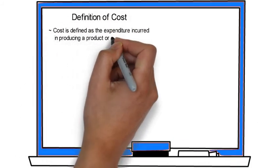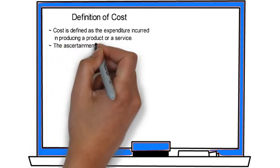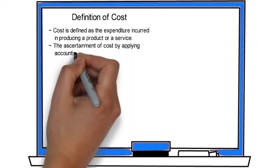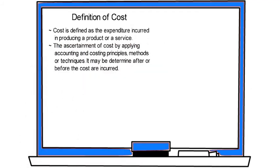Let's look at the definition of cost. Cost is defined as the expenditure incurred in producing a product or service — the ascertainment of cost by applying accounting and costing principles, methods or techniques. It may be determined after or before the costs are incurred.